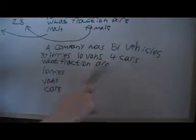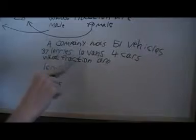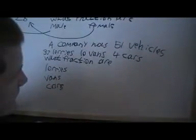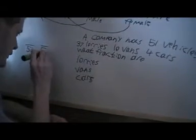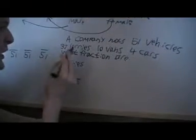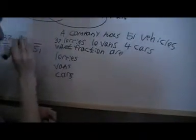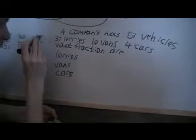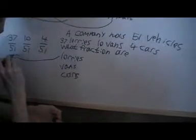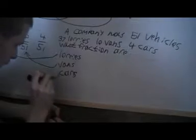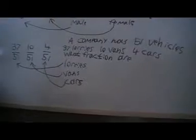The next problem says a company has 51 vehicles: 37 lorries, 10 vans and 4 cars. They're all going to be out of 51 because 51 is the total number of vehicles. 37 of them are lorries, so that's 37 over 51. 10 of them are vans, so that's 10 over 51. There are the solutions to those problems.